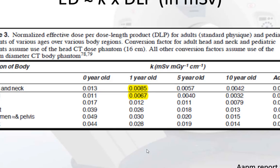Here is a chart commonly used for effective dose conversions. For abdomen and pelvis and chest, K coefficients are commonly referenced. This is actually a pediatric chart, and children are more radiosensitive, so the K number will be higher in a child than in an adult. The chart takes into account both the age of the patient and the radiosensitivity of the body part being scanned.